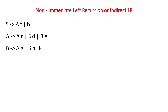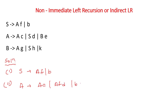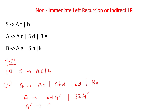Now let's solve another problem with three grammars. For the first grammar, we just write AF | B. For the second, we replace the value of S: SC becomes AFD | BD | BE. Solving this gives A = BDA' | BEA', and A' = epsilon | CA' | FDA'.